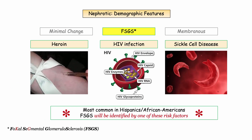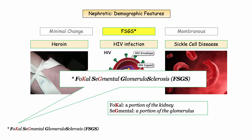Next up is focal segmental glomerulosclerosis. Note that 'focal' refers to a portion of the kidney being involved, whereas 'segmental' implies a portion of the glomerulus — thus the focal and segmental portion of the nomenclature. The sclerosis implies scarring, as we will cover in the pathology section.